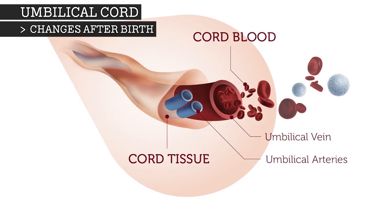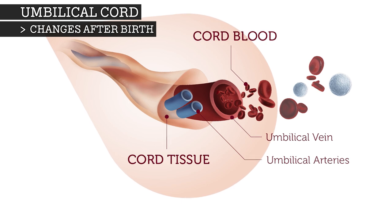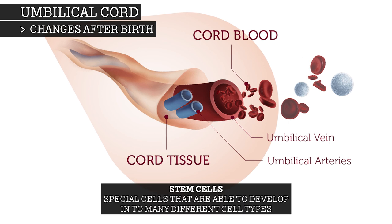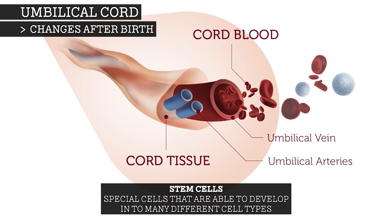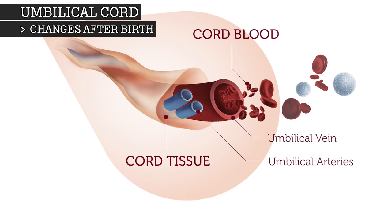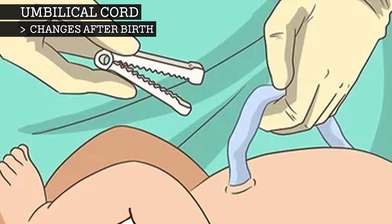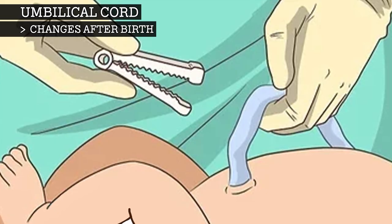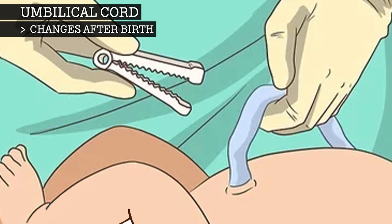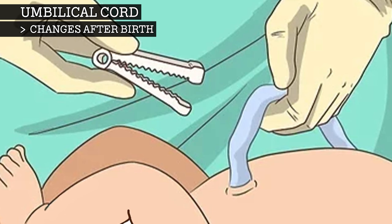After the birth, the umbilical cord will still contain blood. This is called cord blood and controversially can be banked and used to harvest stem cells. After around three minutes, this blood will naturally clot, allowing the cord to effectively clamp itself and halting the flow of blood. At any point, but usually after at least a minute, the doctor will clamp the cord, at which point the baby no longer receives oxygen or nutrients from the mother.